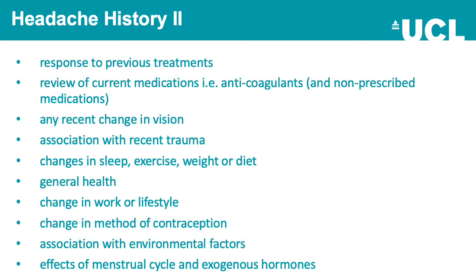Further history points include response to previous treatments, review of current medications such as anticoagulants if concerned about intracerebral hemorrhage or subdural hematoma, non-prescribed medications and herbal remedies that may cause headache, any recent change in vision — important for optic neuritis in multiple sclerosis or pituitary macroadenoma — association with recent trauma, changes in sleep, exercise, weight or diet, change in work or lifestyle, change in method of contraception, association with environmental factors, and effects of the menstrual cycle and exogenous hormones.